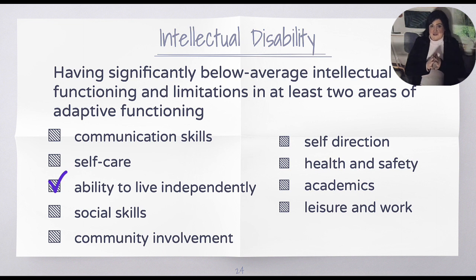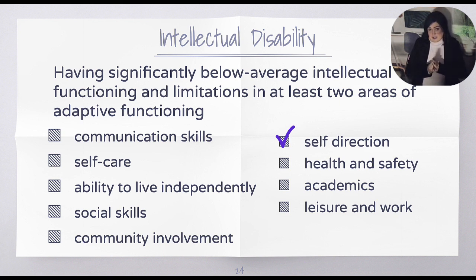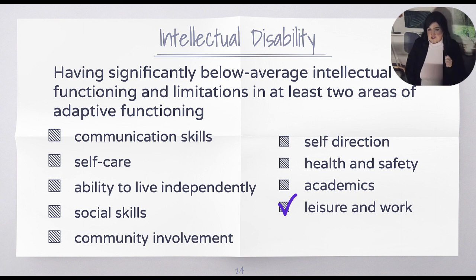The ability to live independently — meaning to leave home and live on one's own — having social skills or being part of a community, understanding the way people network. Having a trait of self-direction, meaning you're not needing to be redirected every single moment when learning something new. Having an awareness of health and safety, understanding certain academics and leisure, and being able to work. So again, it's below average intellectual functioning as well as limitations in at least two of those areas.